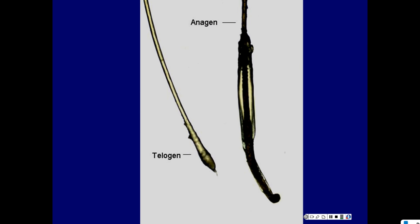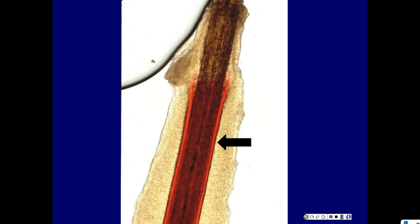On the left, a telogen club hair; on the right, an anagen hair with the follicular sheath coming out — including the inner root sheath surrounded by the outer sheath, visible with a citrulline stain. In diseased scalp or loose anagen syndrome, you don't get the sheath with it. This is what I call the trichobezoar — the paper bag of hair the patient brings in to show how bad their problem is. Most clinicians' first instinct is to say 'thank you' and hand it back, but there is a lot of diagnostic information to be gleaned from it.